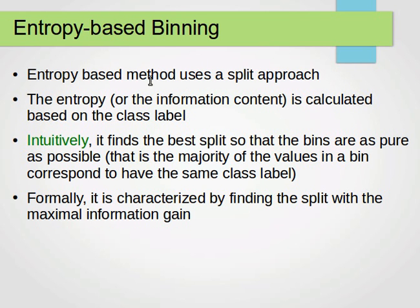Entropy-based binning uses a split approach — we choose the best cut points to create our categories accordingly. The entropy or information content is calculated based on the class label, as we always refer to the class in supervised binning. The intuition is that it finds the best split so that the bins are as pure as possible, meaning the majority of values in a bin share the same class label. Formally, this is characterized by finding the split with the maximal information gain.